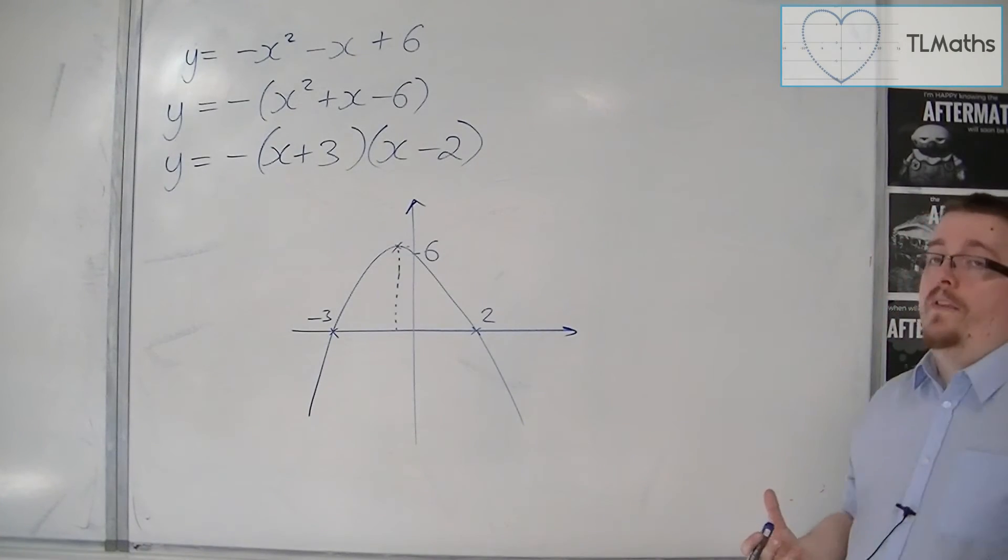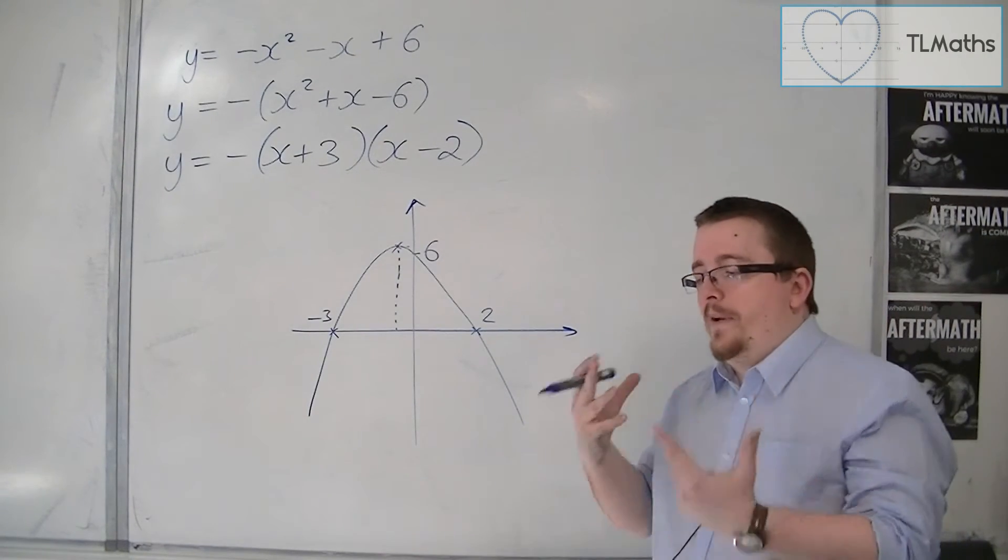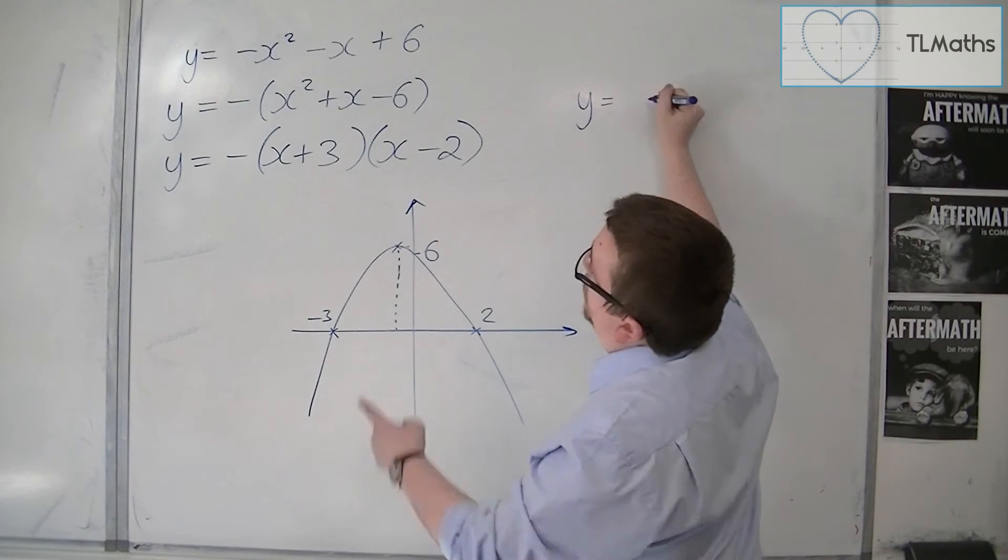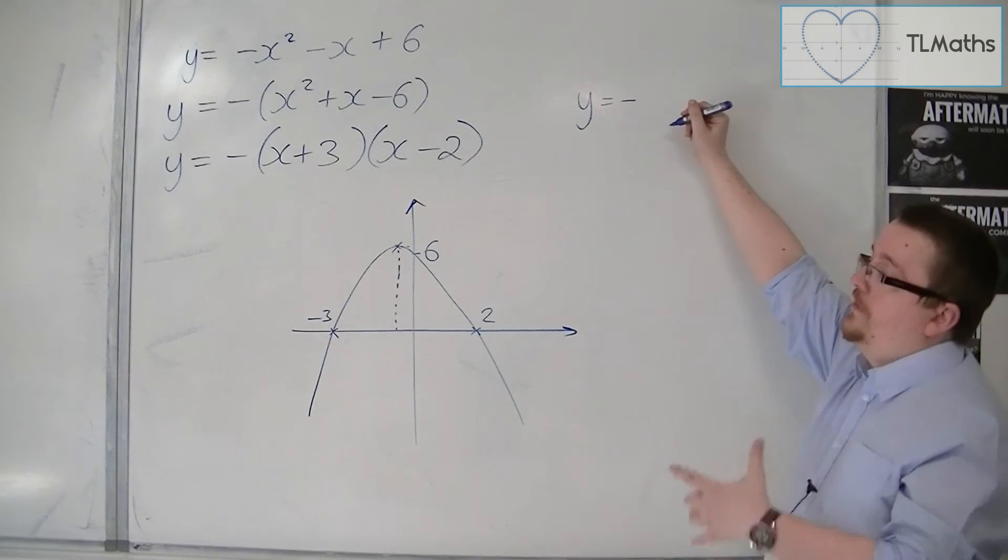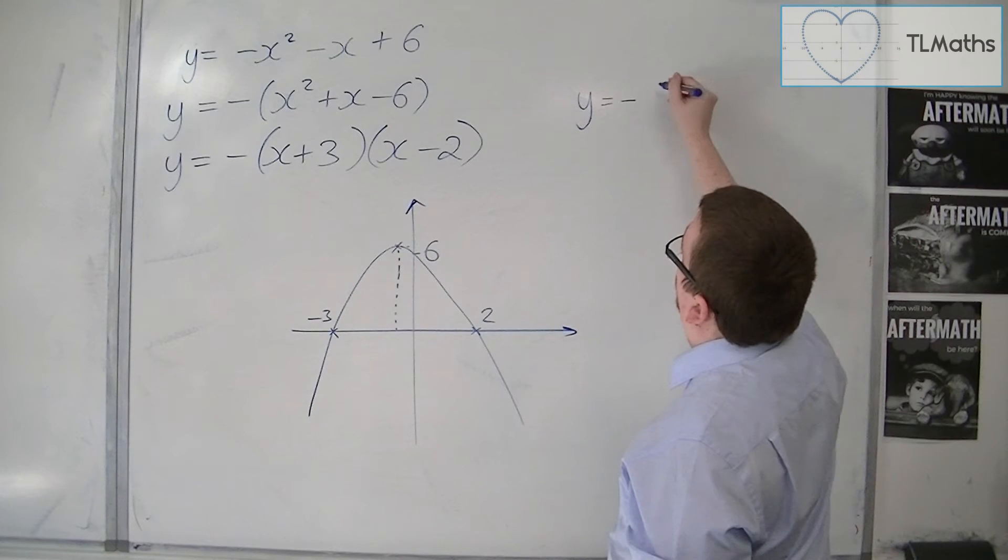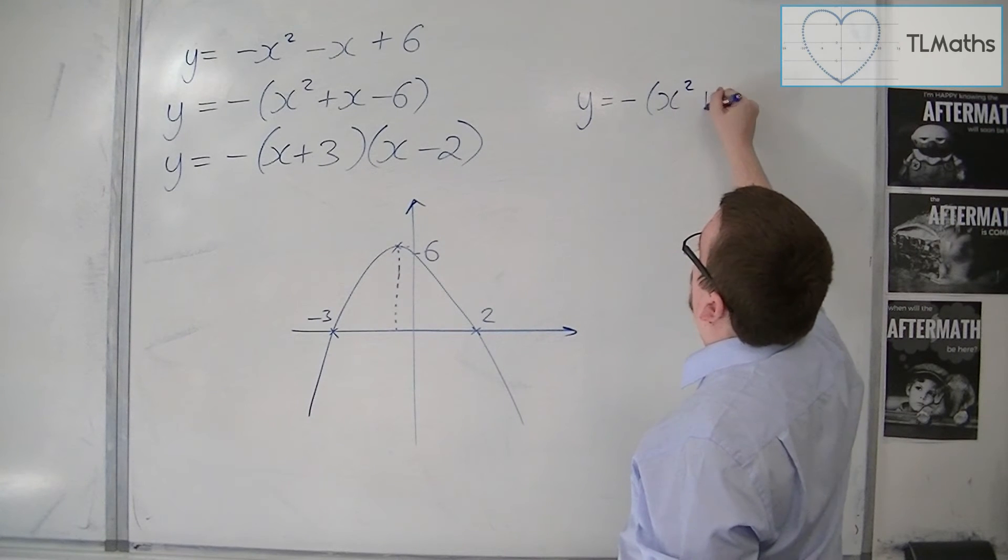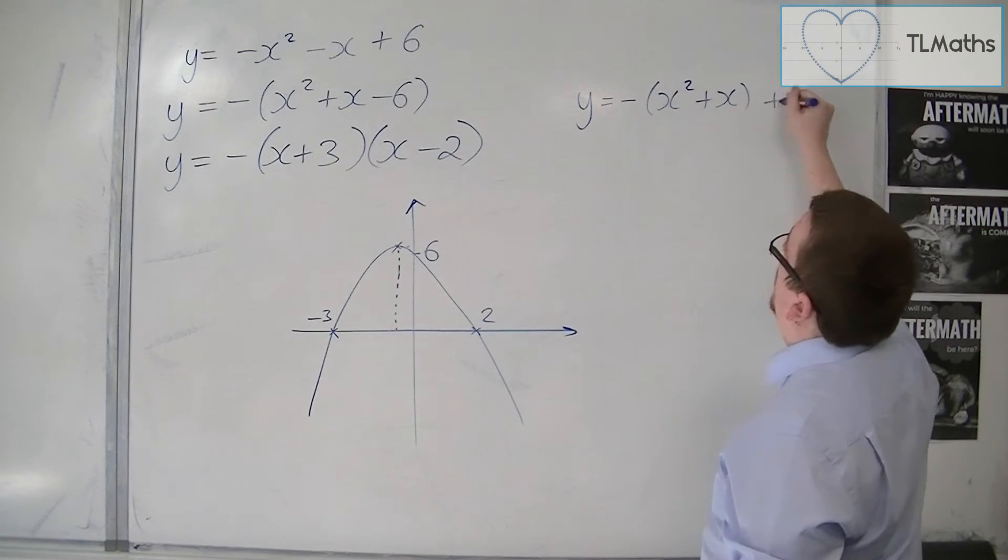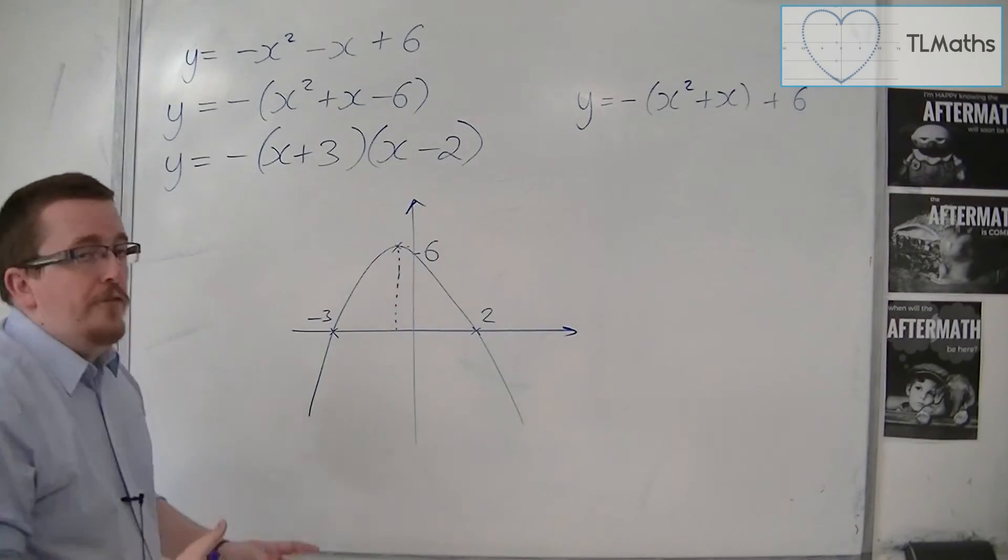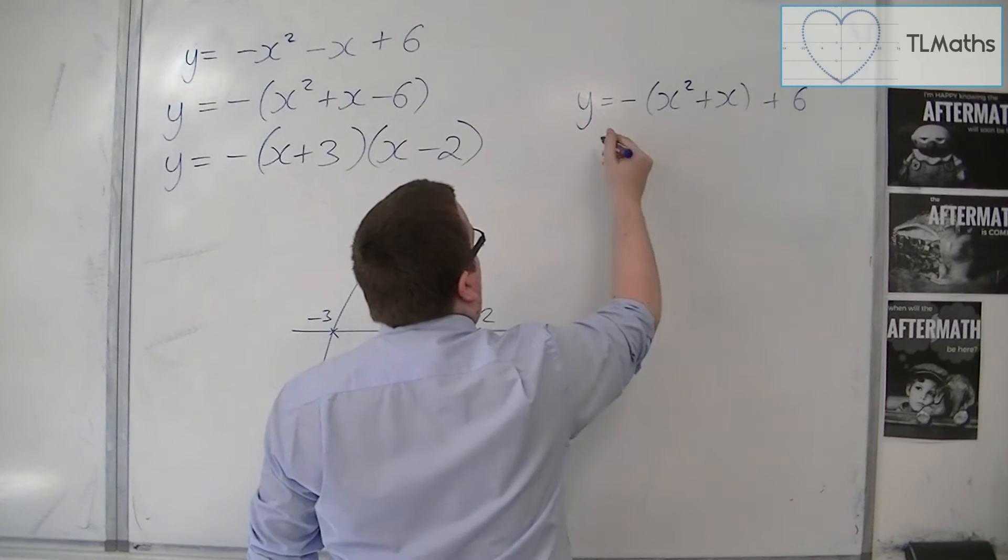Now the way that we would go about that is to complete the square. To complete the square on this, the best thing to do is to take a minus sign out of the first two terms. So write it as minus x squared plus x, and then have the plus 6 like that.